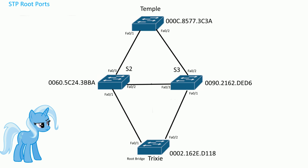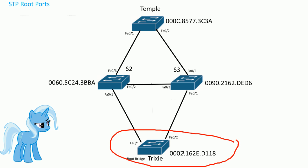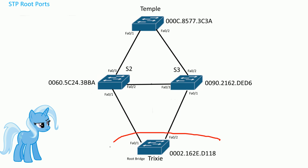The next step in the spanning tree protocol, after we elect a root bridge, is to find the root bridge. In this network, another switch was added. Trixie became the root bridge because her bridge ID — made up of the bridge priority and the MAC address — was the lowest. Looking at the MAC addresses, '2' is less than 'C', so Trixie becomes the root bridge.